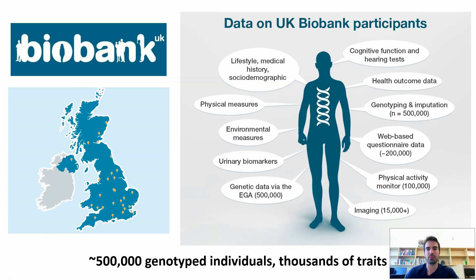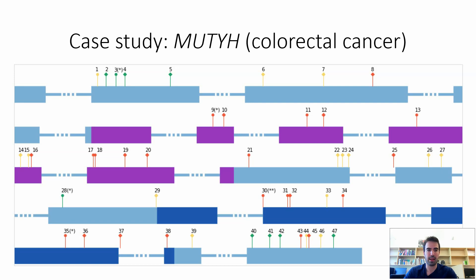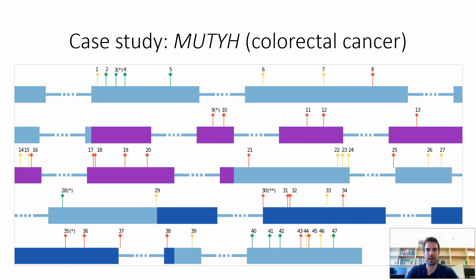To test the method, we worked on the UK Biobank dataset, which contains 500,000 genotyped individuals each with thousands of traits — a really awesome dataset. As a quick case study, let's consider the MUTYH gene, which is a known cancer predisposition gene that increases the risk for colorectal cancer. You can see the architecture of the gene, the exons, specific domains, and the 47 different variants that are genotyped or imputed in the UK Biobank dataset that actually affect the protein sequence of the gene.